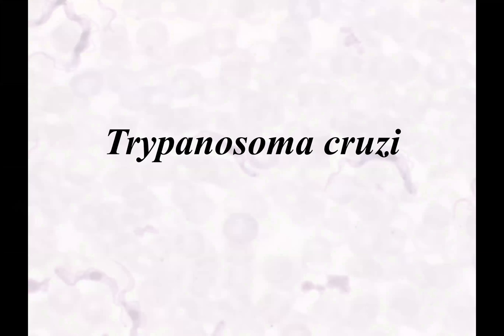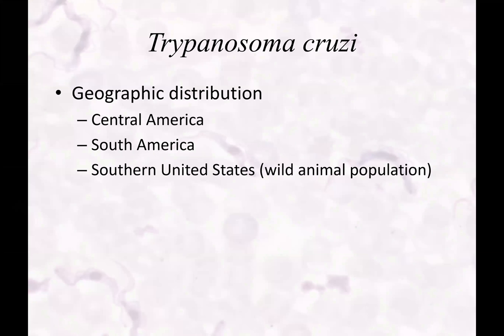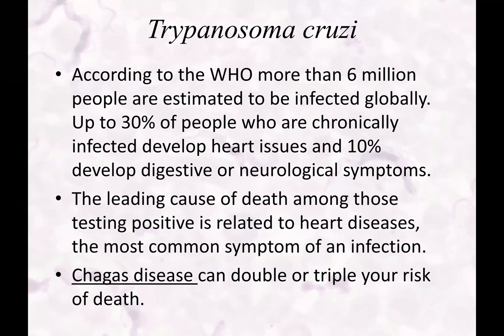Trypanosoma cruzi — geographical location: Central America, South America, Southern United States. The World Health Organization estimates more than 6 million people are infected globally. Thirty percent of chronically infected people develop heart issues; 10% develop digestive and neurological issues. The leading cause of death among those testing positive is heart-related. Chagas disease can double or triple your risk of death.